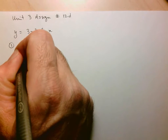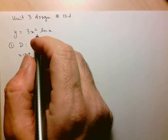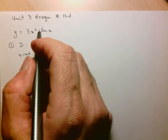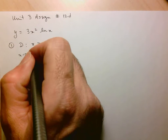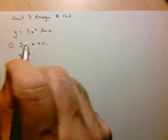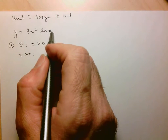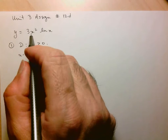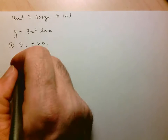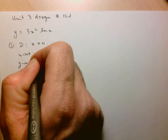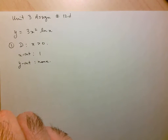If we're looking for x-intercepts, what makes this expression 0? If x equals 0, the whole thing would be 0, but that's not in the domain, so we can't include that. When x equals 1, lnx equals 0, making the whole thing 0. So we have just one x-intercept. For the y-intercept, we have none since x can't equal 0.